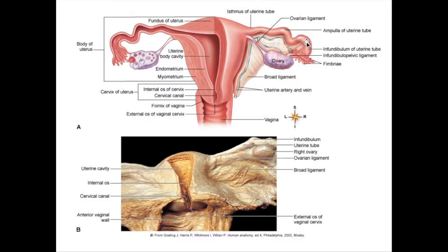So we have an infundibulum and we have an ampulla. Typically a fertilization event will occur in the ampulla, and then remember that seven days later implantation will happen as that fertilized egg traverses through the uterine tube — it will actually plant into the wall of the uterus. Sometimes it doesn't quite make it there. If you have a fertilized egg that only makes it to the tube by day seven, it might actually implant in the wall of the uterine tube. This would be called a tubal pregnancy and is quite a threatening event.